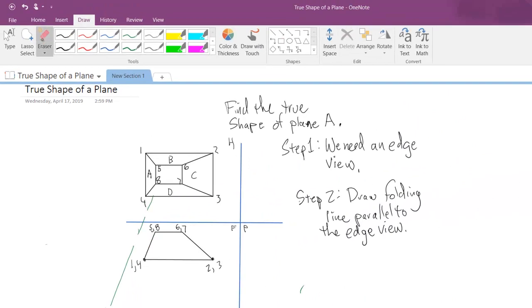Parallel to the edge view. Get rid of all that noise there. Here's a folding line, I've drawn a folding line parallel to the edge view, it's right here. I'm calling the new view, as I did last time when I was trying to get a true length line - this is auxiliary view one.